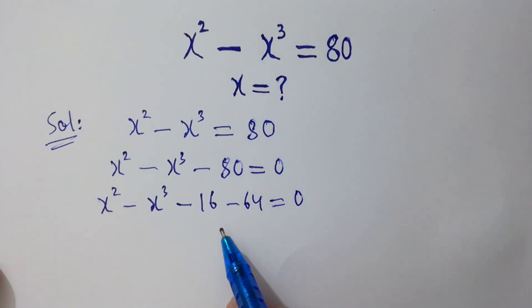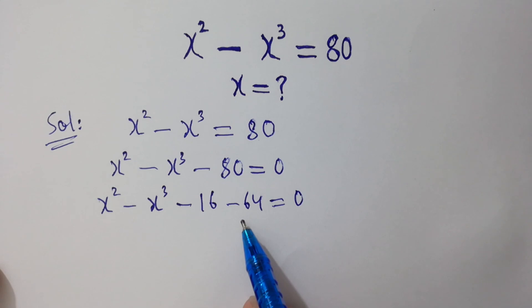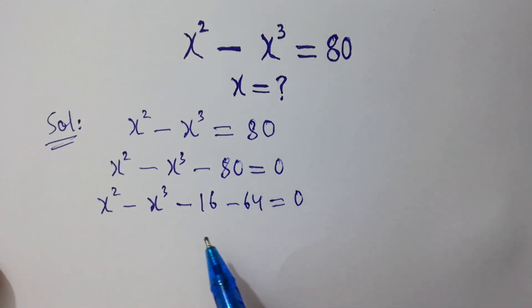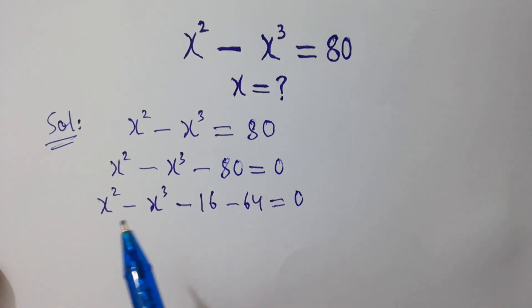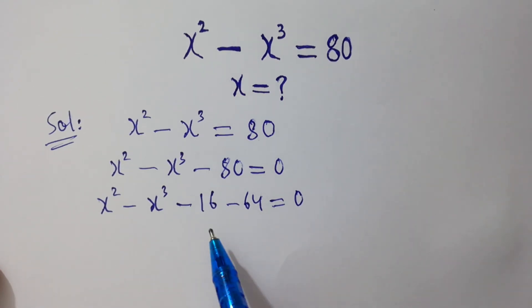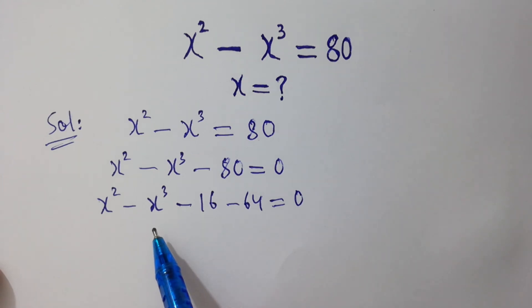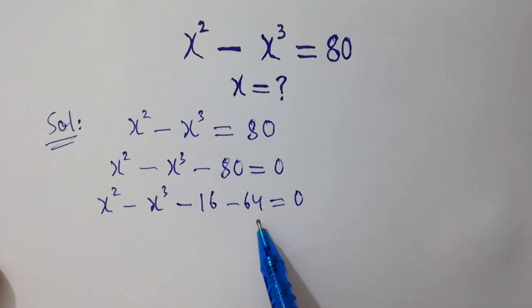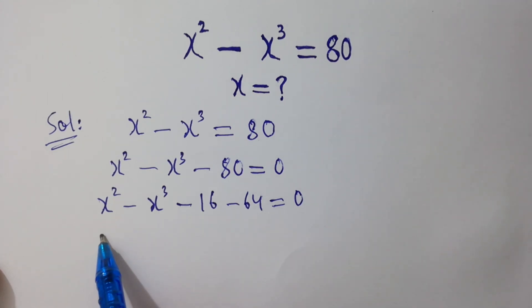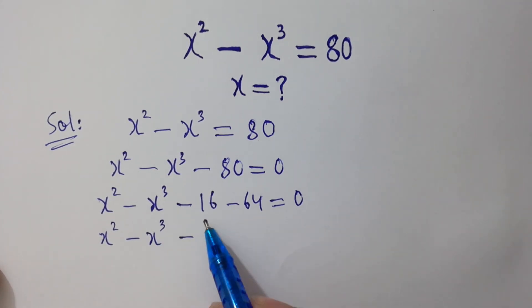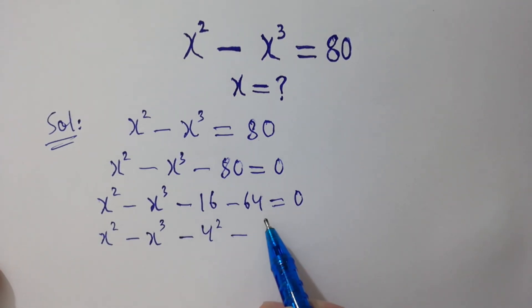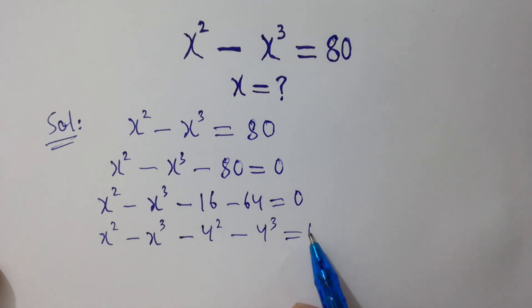Look, 16 plus 64 is 80. I used these because there is x squared — 16 is 4 squared — and there is x cubed — 64 is 4 cubed. So x squared minus x cubed minus 16, which is 4 squared, minus 64, which is 4 cubed, equals 0.